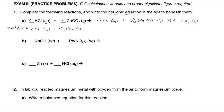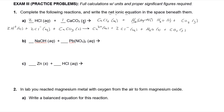On the product side, calcium chloride is aqueous, meaning it's a soluble salt, so it dissociates into calcium two-plus (aqueous) and two chloride ions (aqueous). Water is a pure molecular liquid — molecular liquids don't break up — so we write it unchanged. Carbon dioxide is a gas and also a molecular species, so we write it as CO2 gas. This gives us the complete ionic equation.